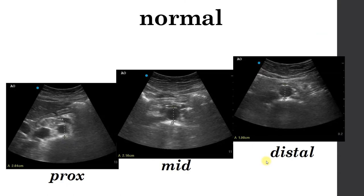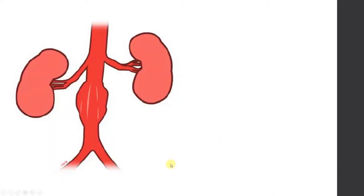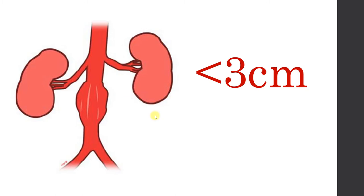Here is what a normal aorta looks like — the proximal, mid-, and distal aorta in the short axis view with the indicator aiming towards the patient's right side. We measure the aorta from anterior to posterior. As you go down the body, the aorta becomes more superficial and should normally become narrower. The question to ask is: is there evidence of a AAA, and is it leaking or ruptured? Remember that most AAAs live in the mid-aorta, beneath the renal arteries. The number we care about is three centimeters — anything less than three centimeters is normal, anything greater is abnormal. The way I remember this: there are three A's in AAA, so less than three centimeters is normal.